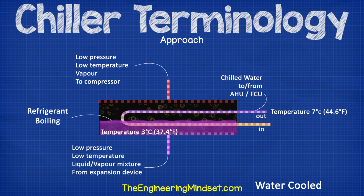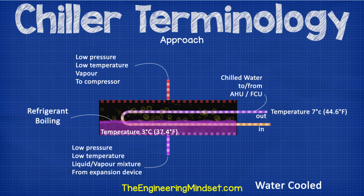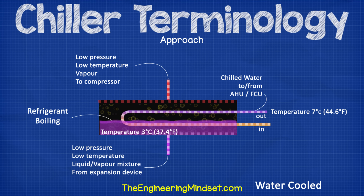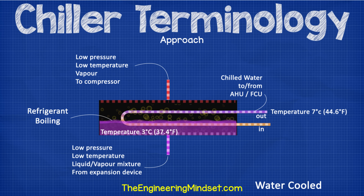Approach temperature. This refers to the temperature difference between the chilled water supply temperature as it exits the chiller compared to the temperature of the refrigerant within the evaporator. For example, the chilled water supply temperature might be 7°C (44.6°F) and the refrigerant might be at 3°C (37.4°F). The approach would therefore equal 4°C (7.2°F). A difference of 3 to 5°C (5 to 8°F) is fairly typical.